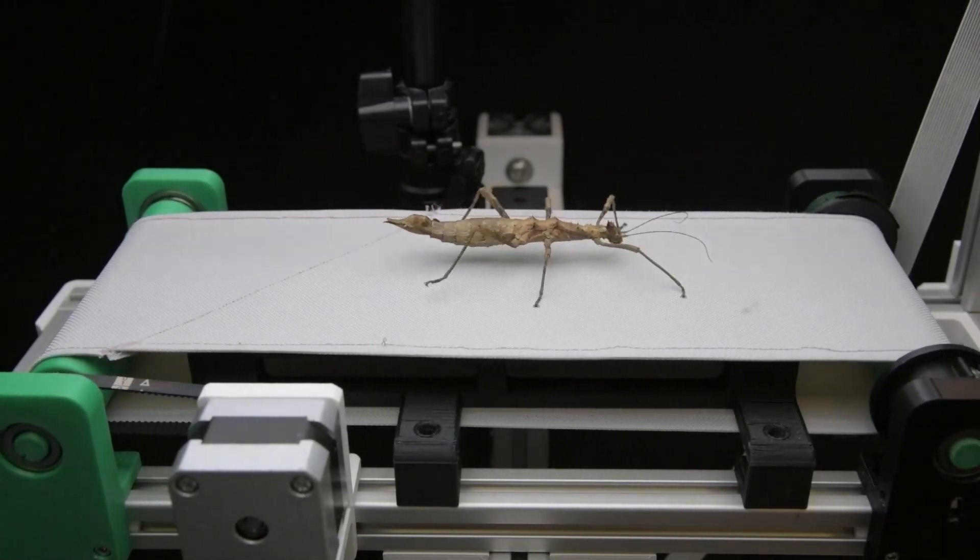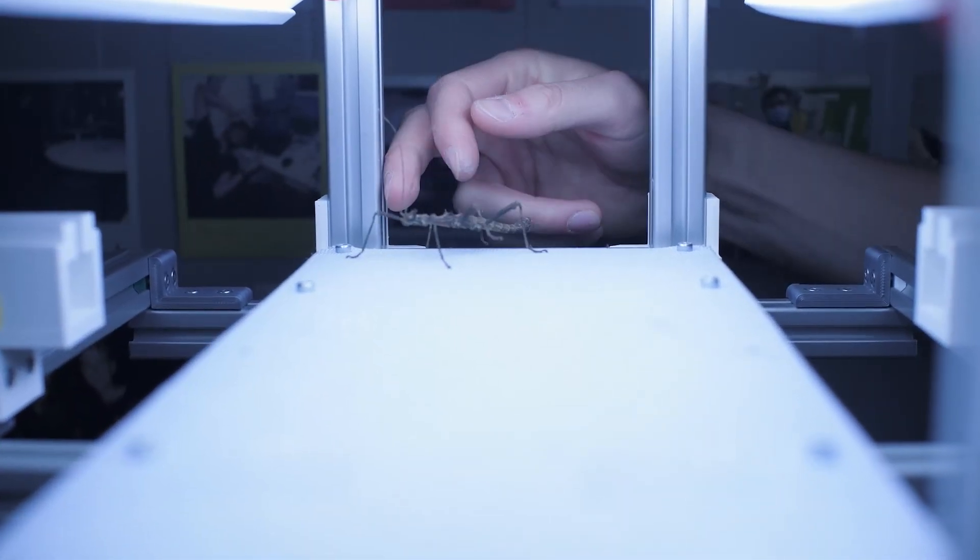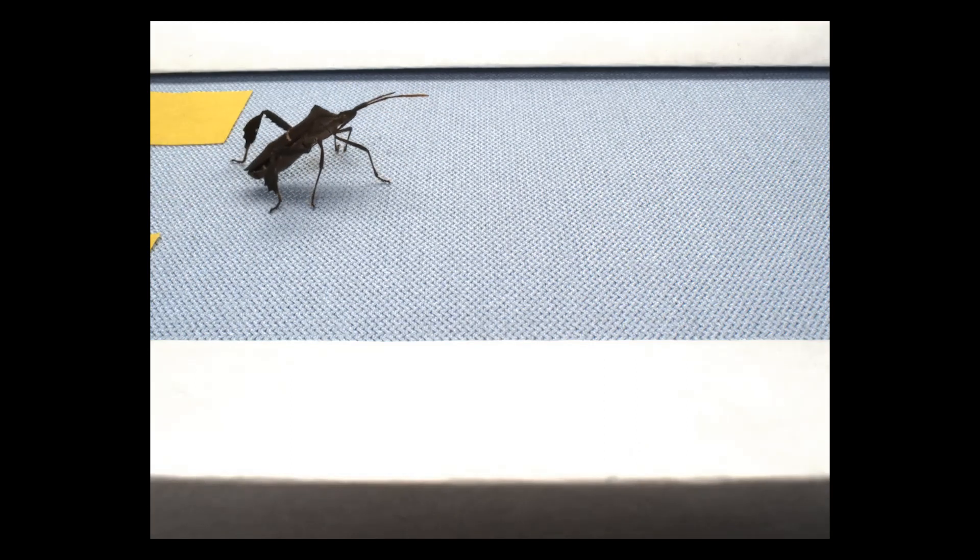However, obtaining locomotion data of insects still remains difficult and at best tedious. Insects generally do not cooperate and tend to walk off to all sides.